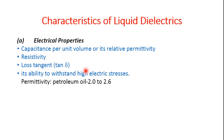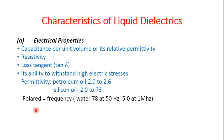The power factor is an indication of power loss under AC applications, along with the ability to withstand high dielectric stress. The permittivity for most petroleum oils varies from 2 to 2.6, while that of silicone oils varies from 2 to 7.3. In the case of non-polar liquids, permittivity is directly proportional to frequency, whereas in polar liquids such as water it changes with frequency. For example, the permittivity of water is 78 at 50 Hz and reduces to about 5 at 1 MHz.